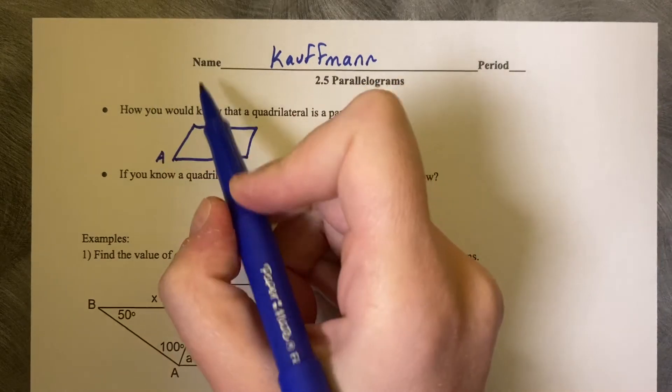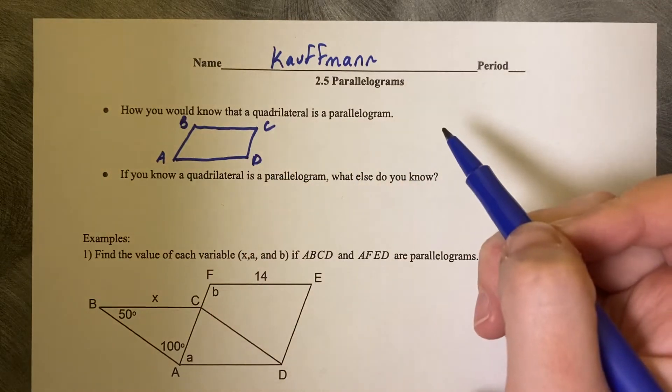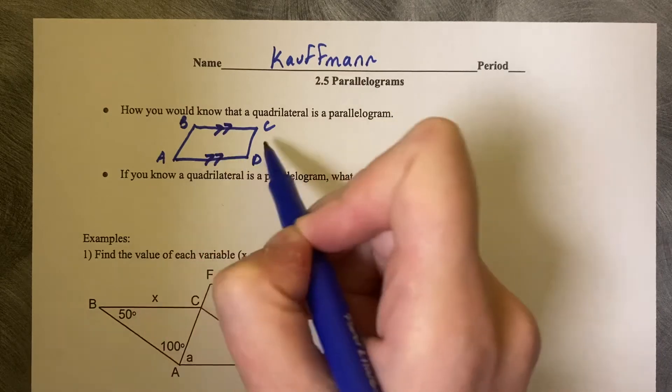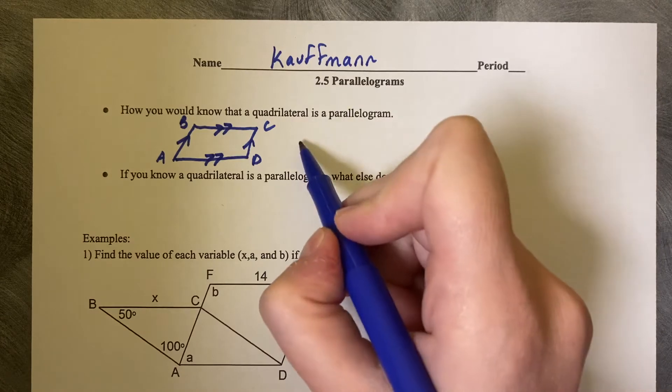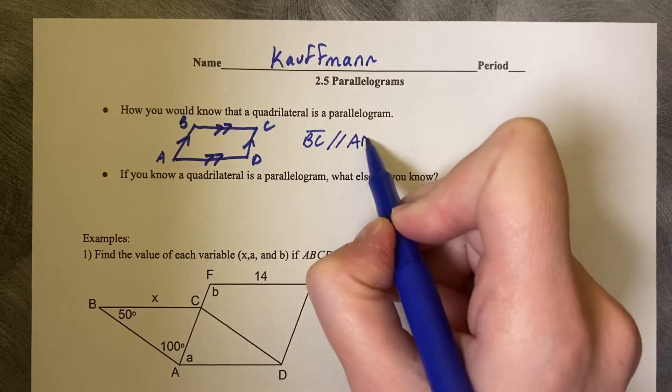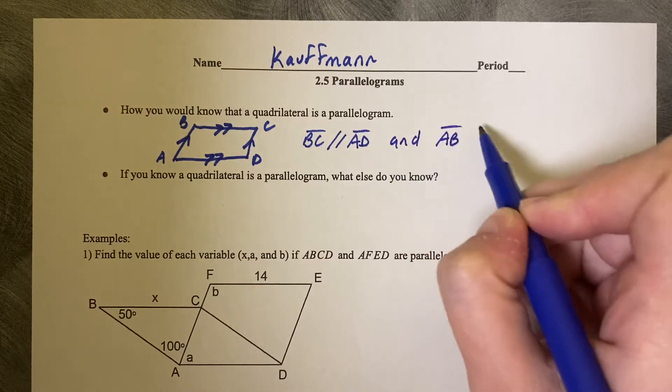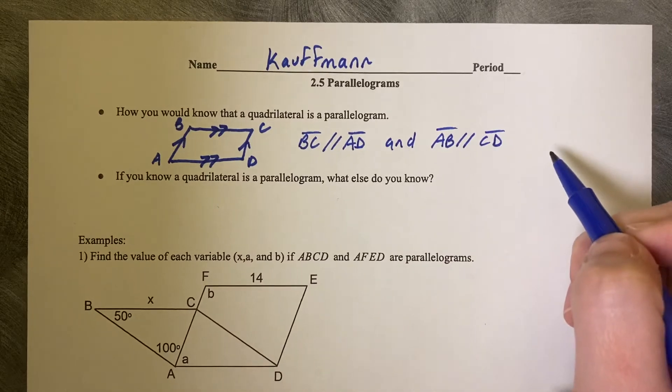Let's just draw a random one. The way that you would know that it was a parallelogram is if it had two sets of opposite sides that are parallel. So that would mean that BC is parallel to AD and AB is parallel to CD. Two sets of parallels.